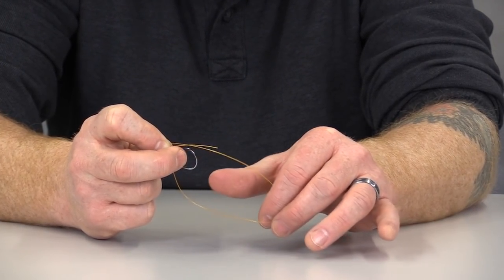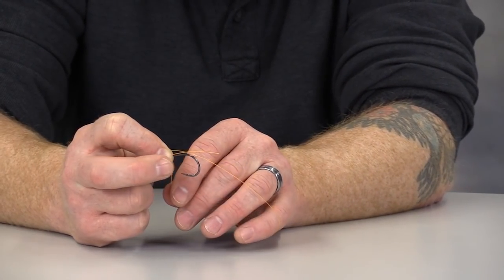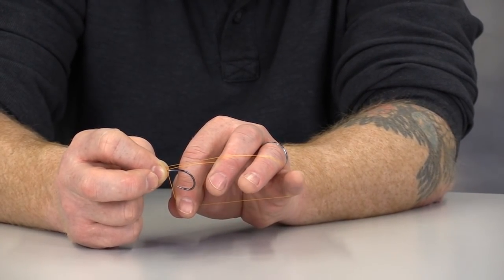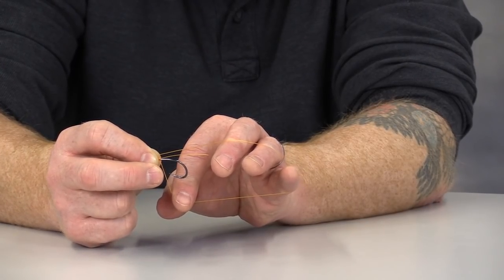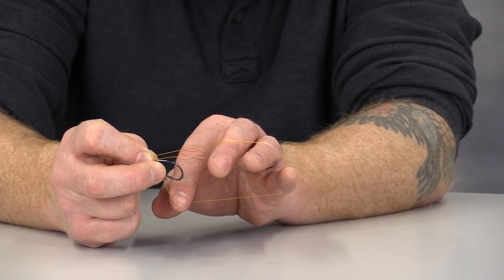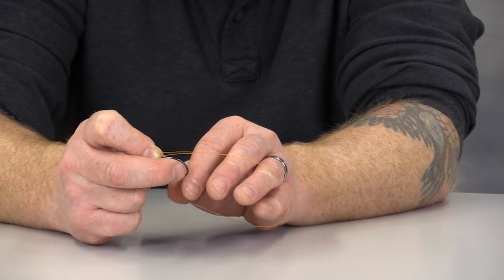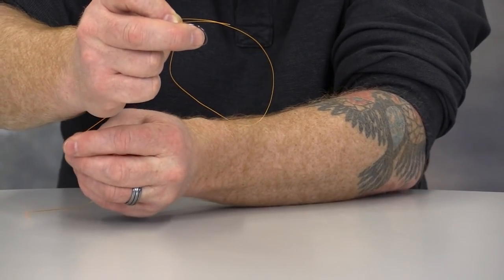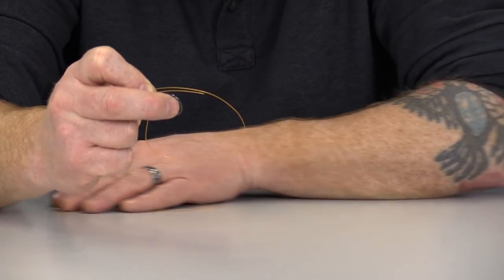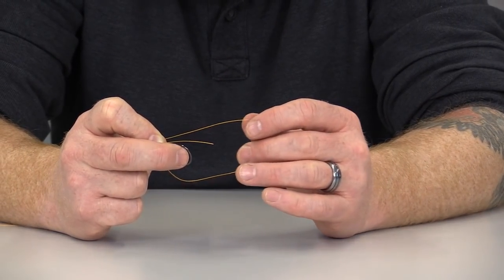And then this bottom section here is going to be the line that is connected to those wraps. So I'm going to take that bottom section and I'm just going to move it down. I've got a section of line that goes down there that's adjoined to the shank of the hook. And then I've got this top section of line here that can be opened or closed by simply pulling on the larger section of the leader.